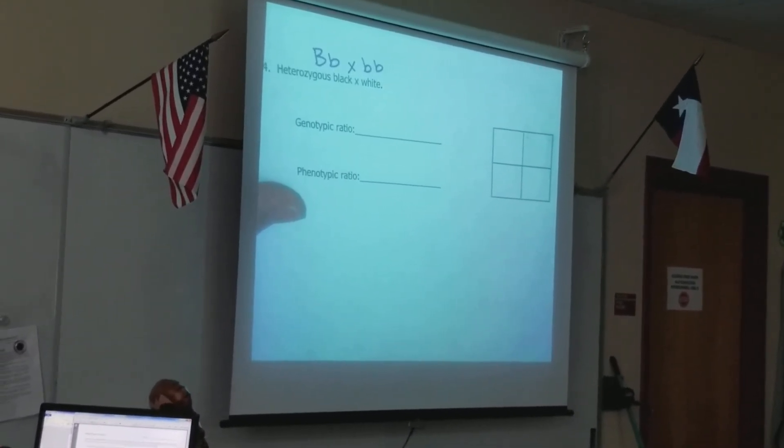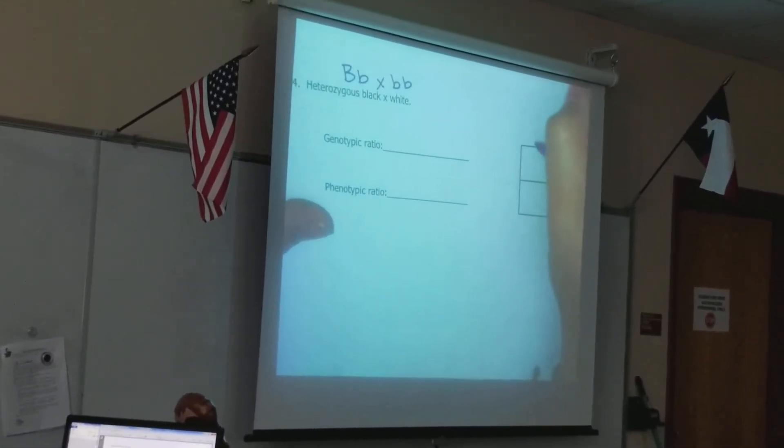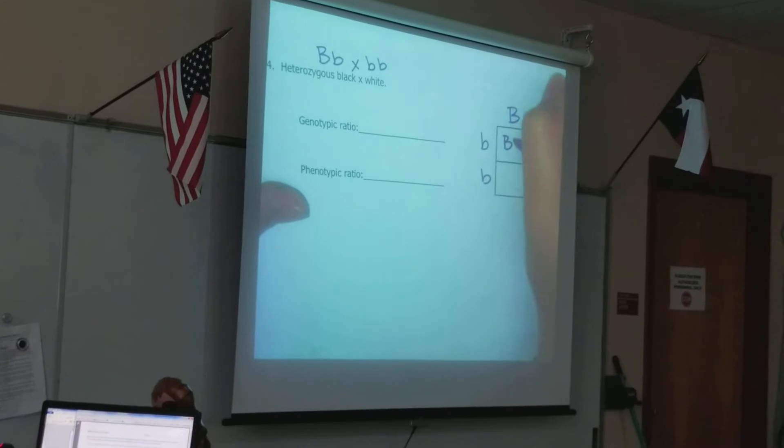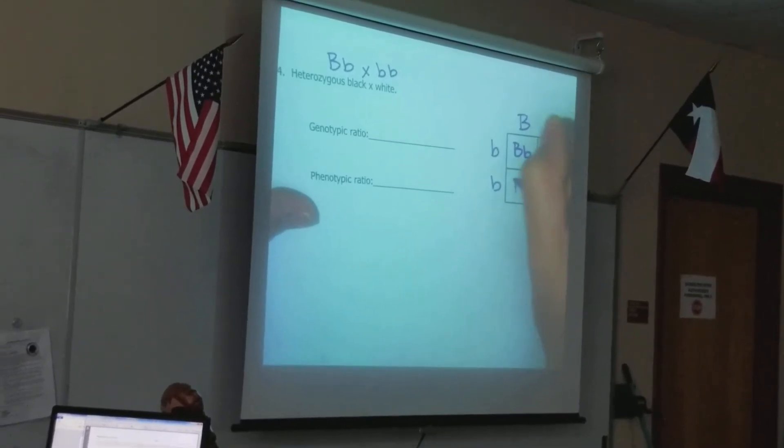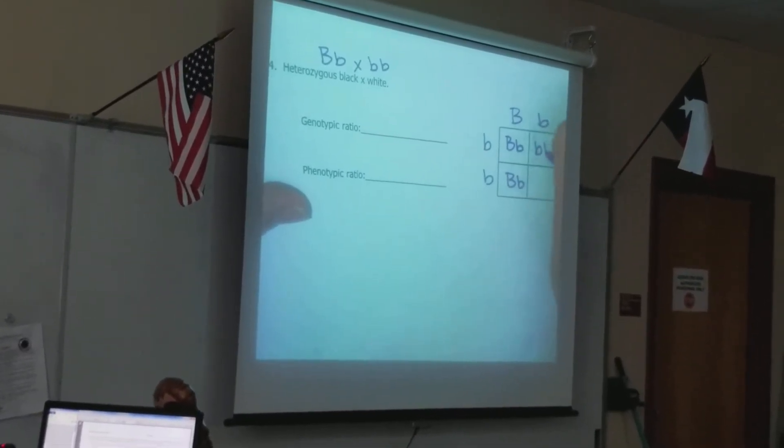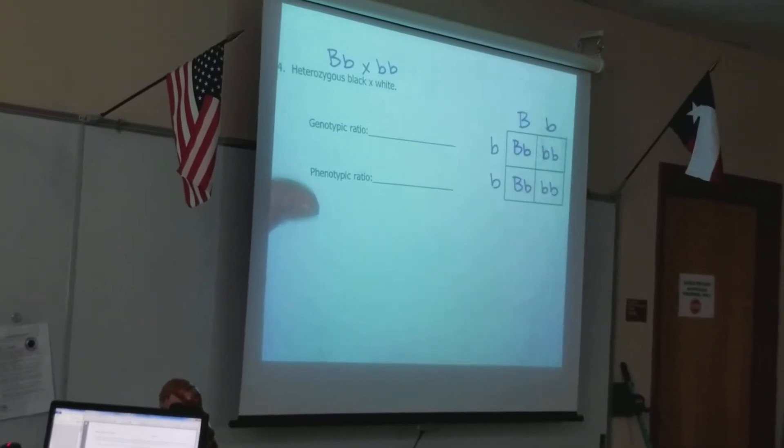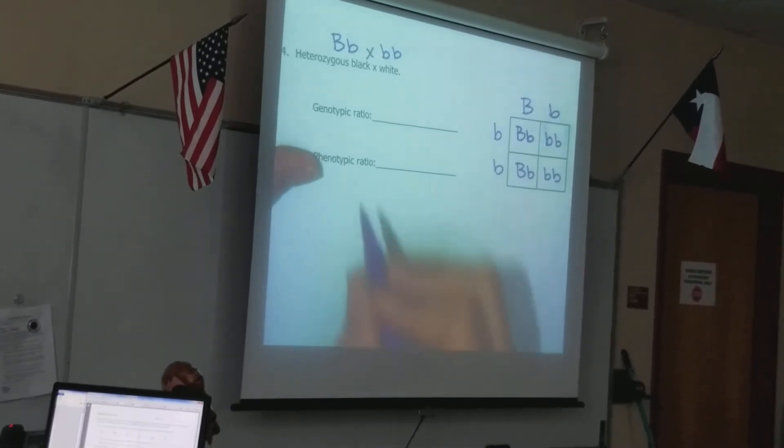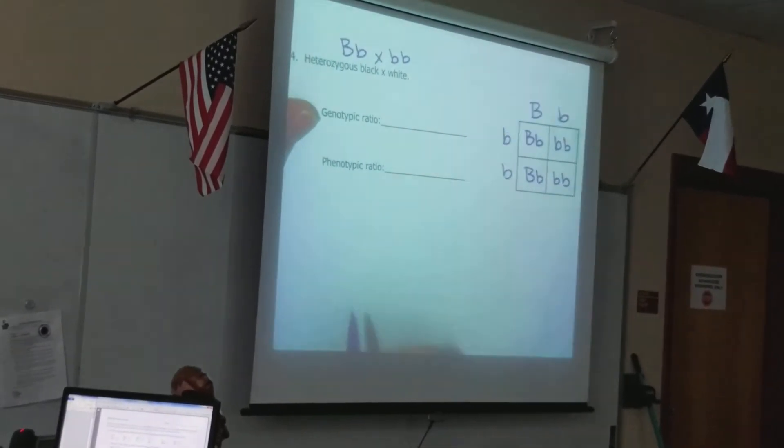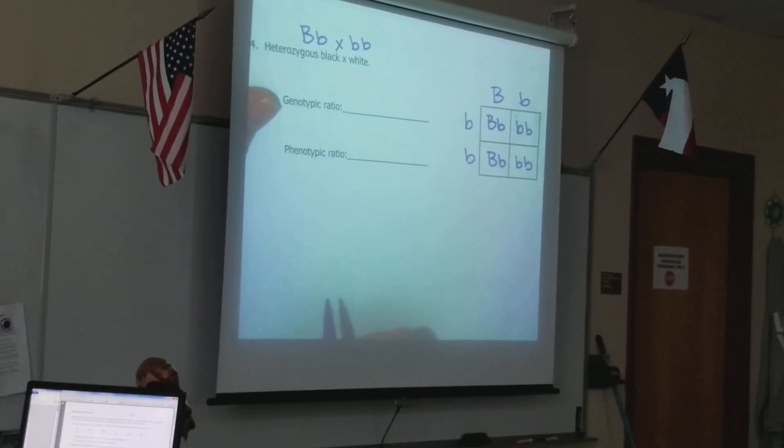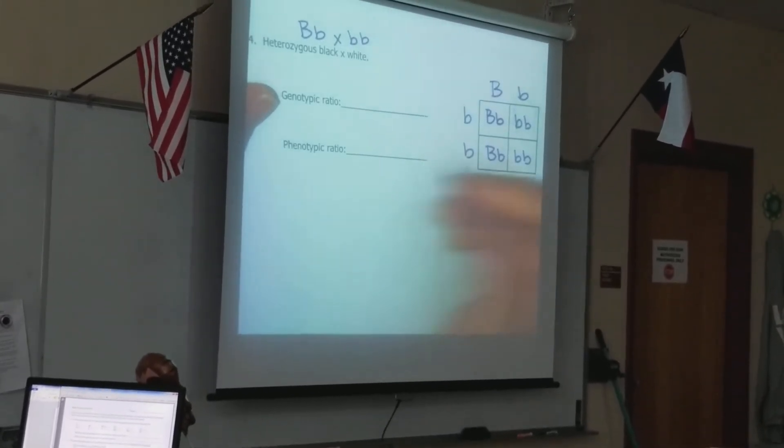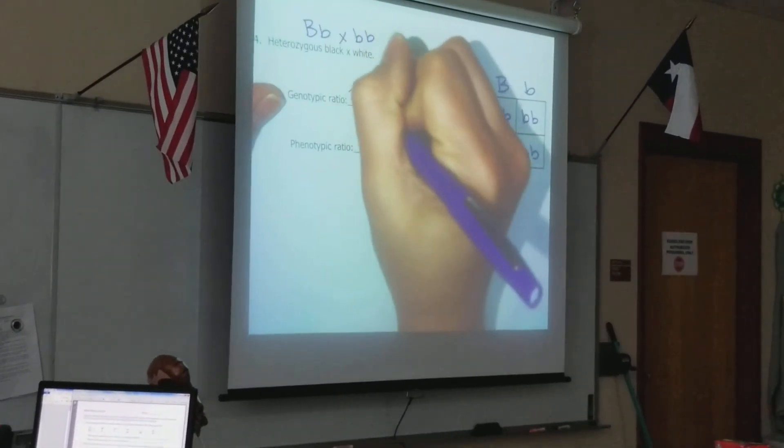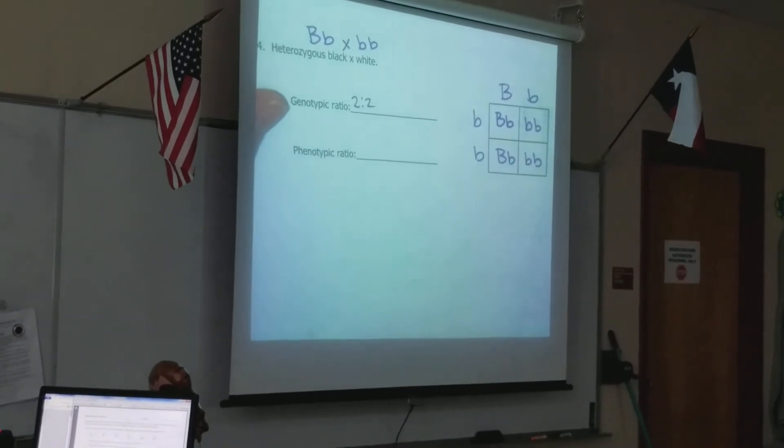Now that I have my two genotypes for my parents, I can use my law of segregation to put them on the top and on the left. I always list the dominant allele first because the law of dominance tells you that that's going to be the one expressed. And now I can go through and write my genotypes. So I'm going to say what? Two are.